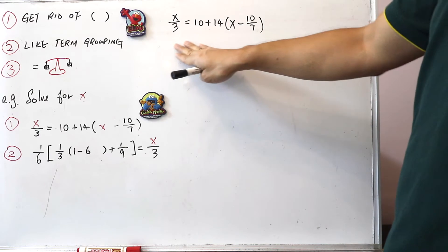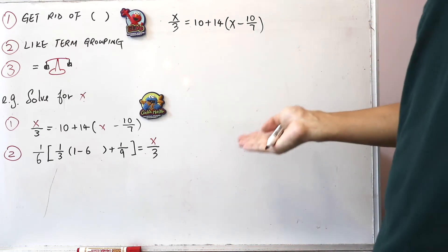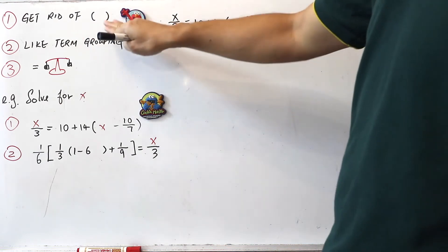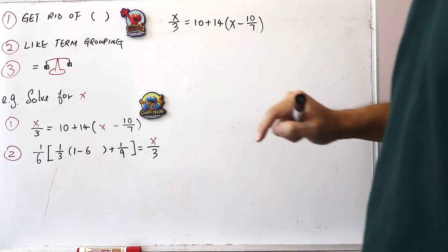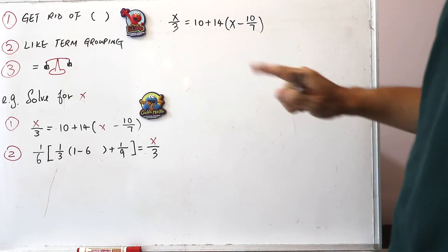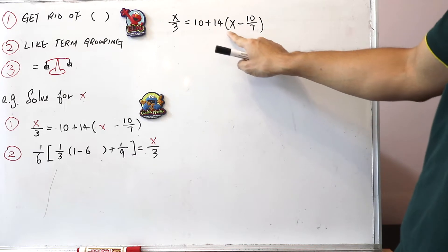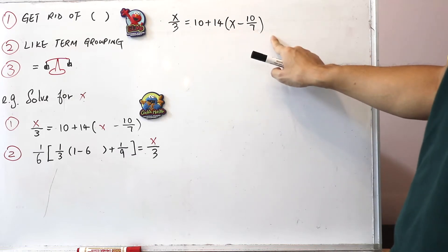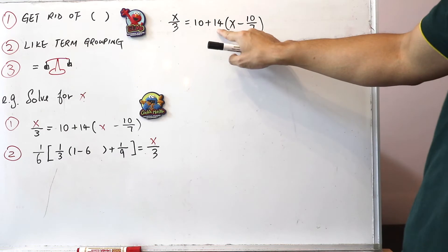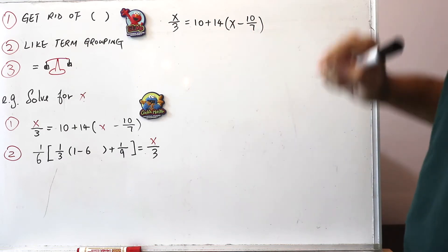A lot of students find these kinds of questions difficult because they don't know where to start. That's why I'm giving you these three highlights. Let's work on them one by one, starting with highlight number one: get rid of the brackets. Here you can see there's a round bracket — how do you get rid of it?